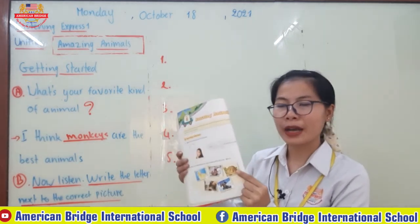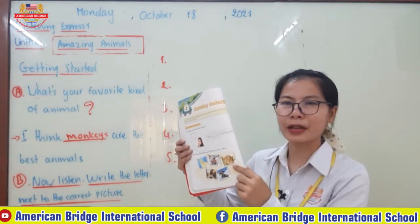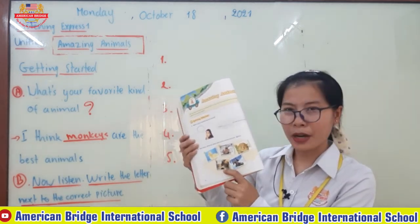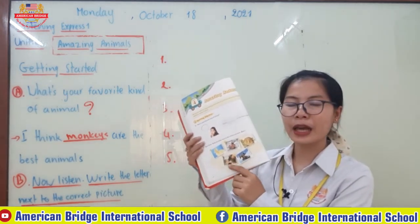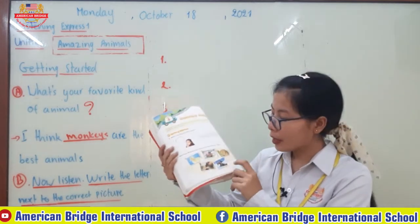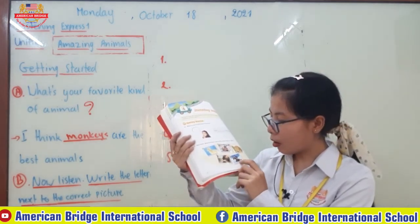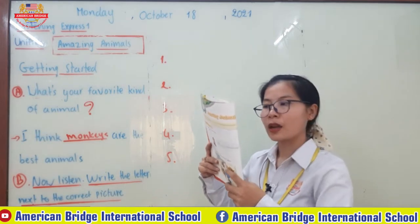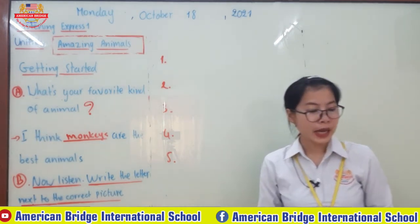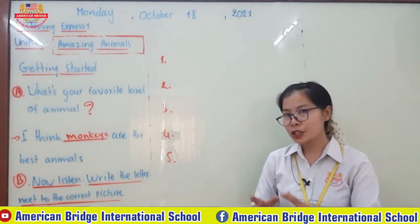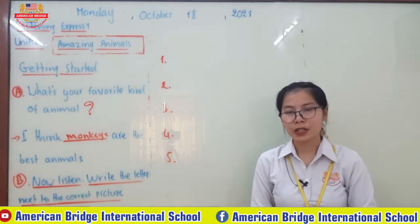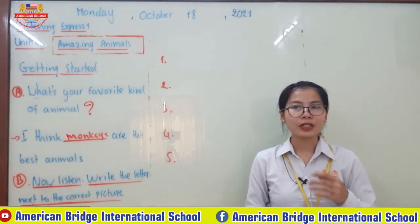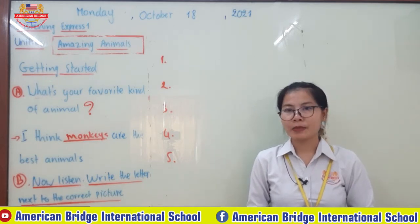Then there's a picture of a monkey, a picture of a bird with a girl, and a picture of a horse — you can see a person riding a horse. You have to listen and write the letter that best describes each picture. I hope you can try your best by yourself first, and then check the answers with me. Let's start.